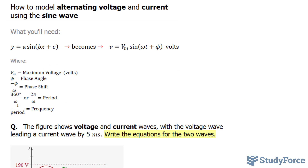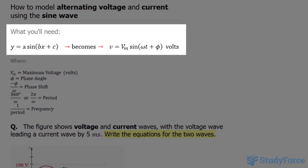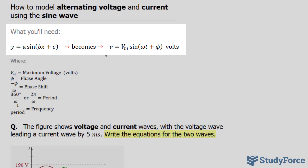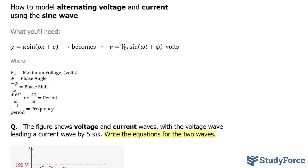In this video, I'll show you how to model alternating voltage and current using the sine wave. What you'll need to be successful is knowing how to convert a sine function into a voltage sine function. It's almost the same: Y is replaced with V, which represents volts. V subscript M represents maximum voltage. You have omega T plus phi, where phi represents your phase angle and omega represents your angular velocity.